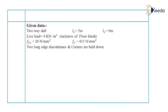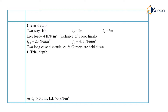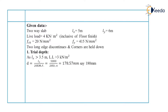In the problem statement, two long edges are discontinuous and corners are held down. Our first step is to calculate the trial depth. Since Lx (shorter span) is greater than 3.5 meter and live load is greater than 3 kN per meter square, we use the formula: effective depth equals Lx divided by 20 into modification factor. Assuming a modification factor of 1.4, the effective depth is 178.57 mm, which we round to 180 mm.